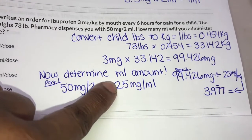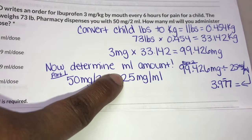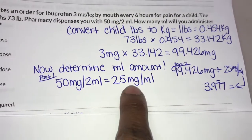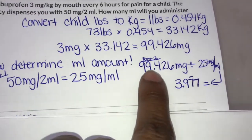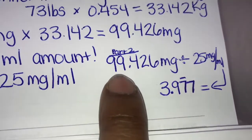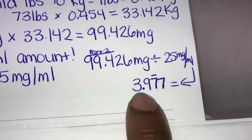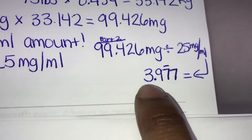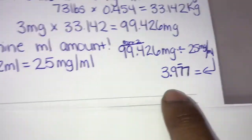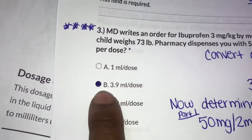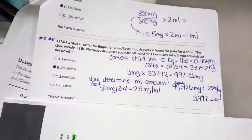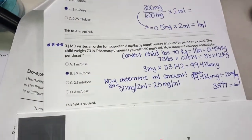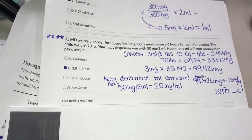You're left with 25 mg/ml. So you take the total milligrams you calculated — 99.426 — and divide it by 25, and that'll give you the answer. The answer is 3.9 ml. Certain questions you want to take your time with because it may be a two-part question or scenario.